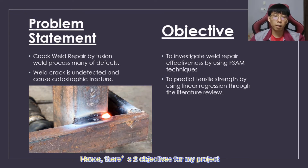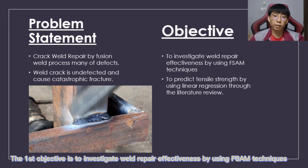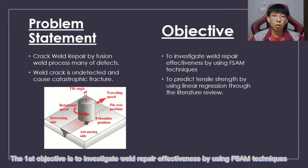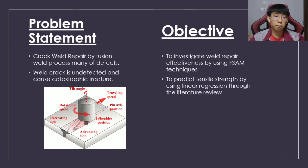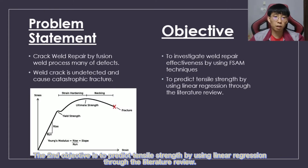Hence, there are two objectives for my project. The first objective is to investigate weld repair effectiveness by using friction stir welding techniques. The second objective is to predict tensile strength by using linear regression through the literature review.